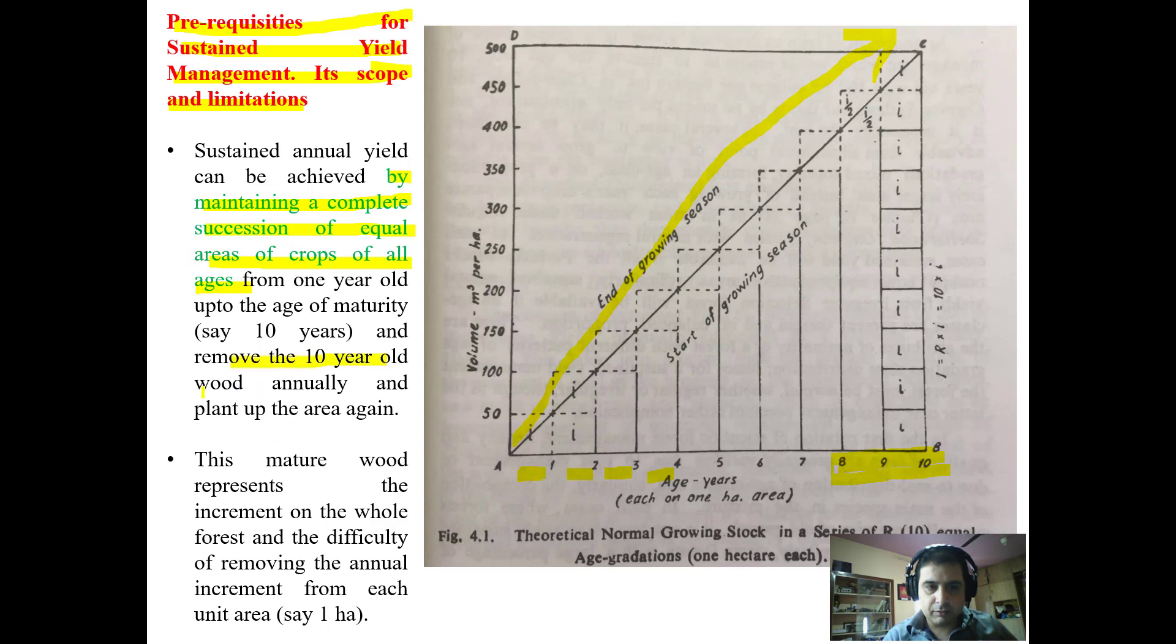I already told you, the 10-year-old wood, this mature wood, represents the increment on the whole forest. Now once we in the 10th year take this harvest of this coupe as increment, it represents increment from the whole forest because this has also contributed i, this contributed i, this has contributed i, this has contributed i, this has contributed i. Each year, this has contributed as i.